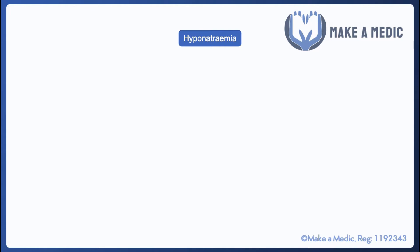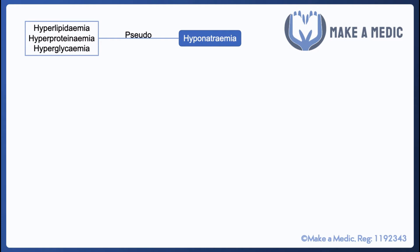First and foremost, it's important to consider whether the hyponatremia result is true, because there are some other serum abnormalities which can give a machine result of low sodium without it being necessarily true — that's referred to as pseudohyponatremia. The main abnormalities that give rise to pseudohyponatremia are hyperlipidemia, hyperproteinemia, and hyperglycemia.